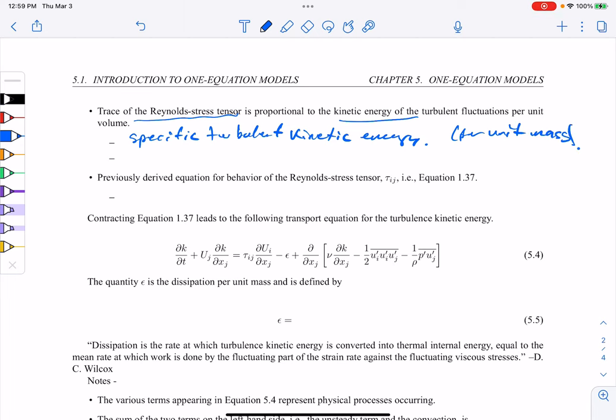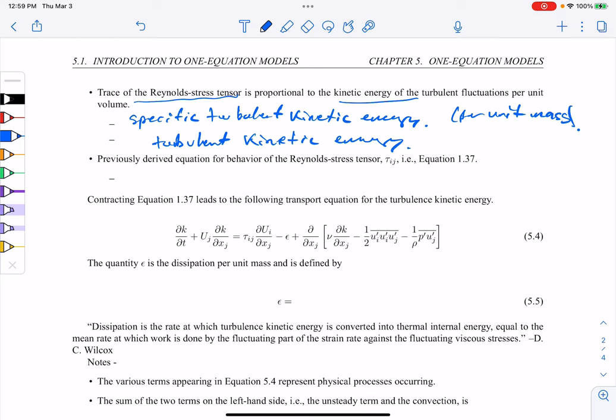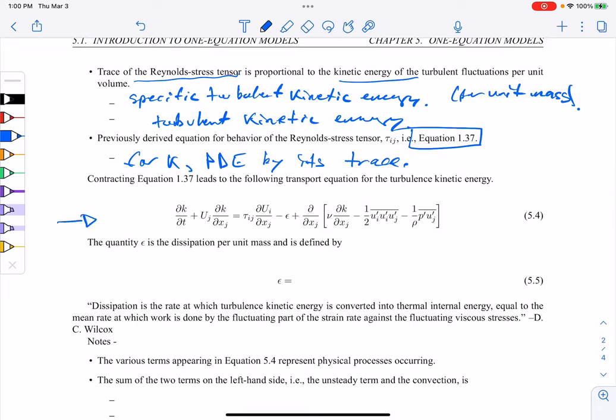Way back, equation 1.37 was the Reynolds stress tensor and equation. We can look at that and see that equation is for k, which is a PDE, by its trace of u1,1, or i1,1, 2,2, and 3,3 on that tensor. If you take that trace, you can find equation 5.4. I believe we've done that in chapter 1 or 2. So this is kind of our base equation.